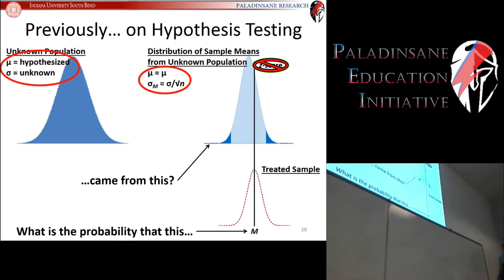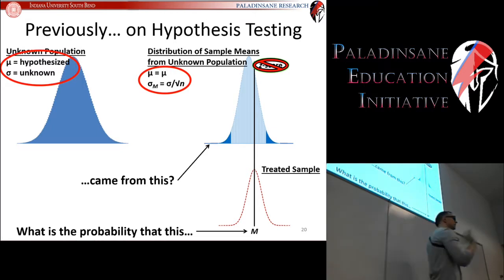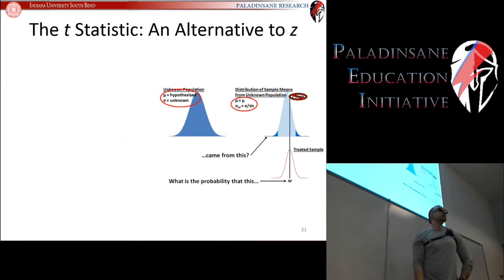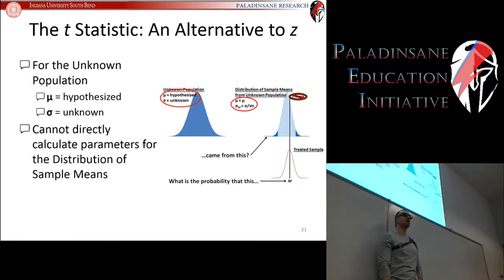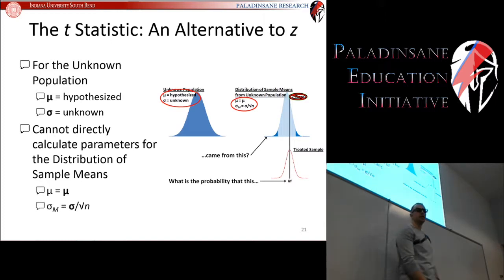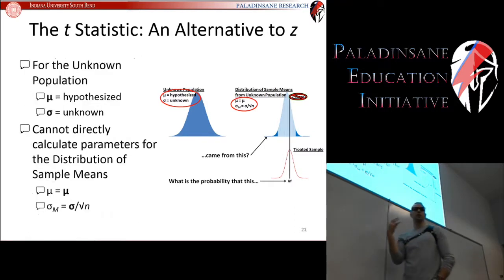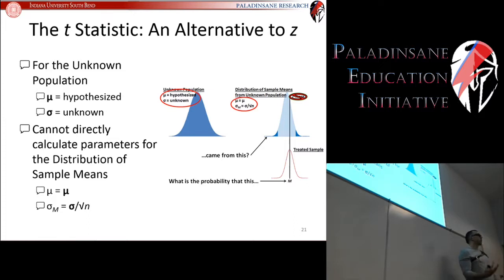So what do statisticians do? They said we can't use the z-score, so we're going to make an alternative — another z-score-like statistic. That was the t-statistic. The t-statistic is what we're going to use moving forward for this situation where the mean is hypothesized and the standard deviation is unknown. You cannot directly calculate the distribution of sample means because you need that unknown standard deviation. So the t-statistic comes in and substitutes for the z-statistic.